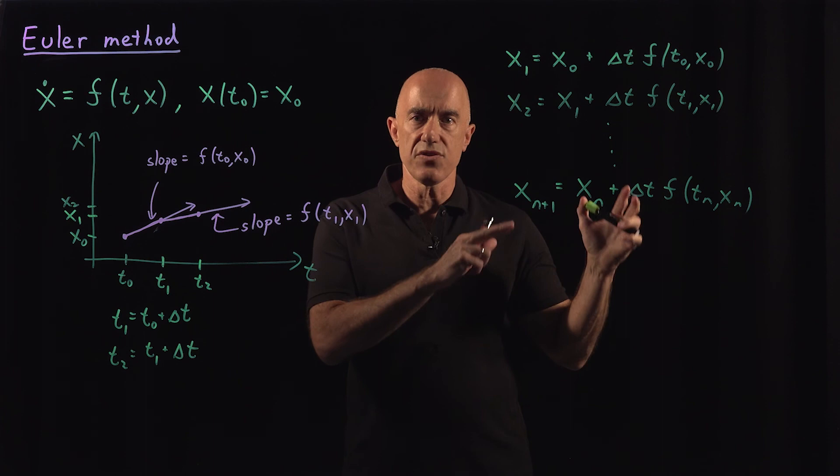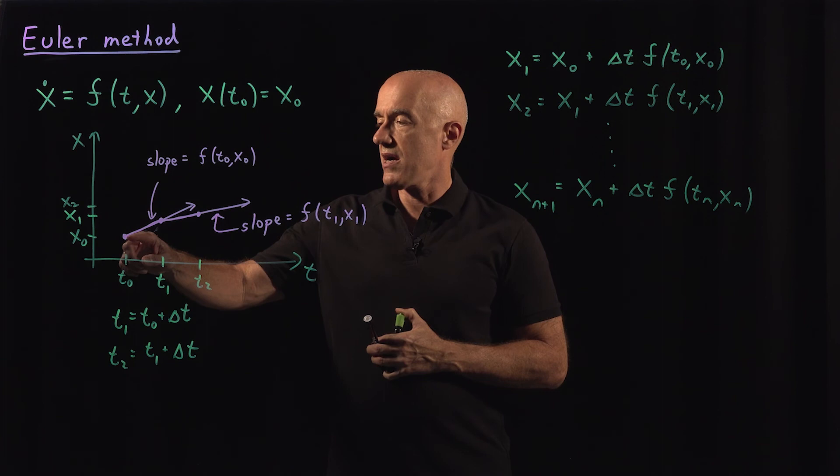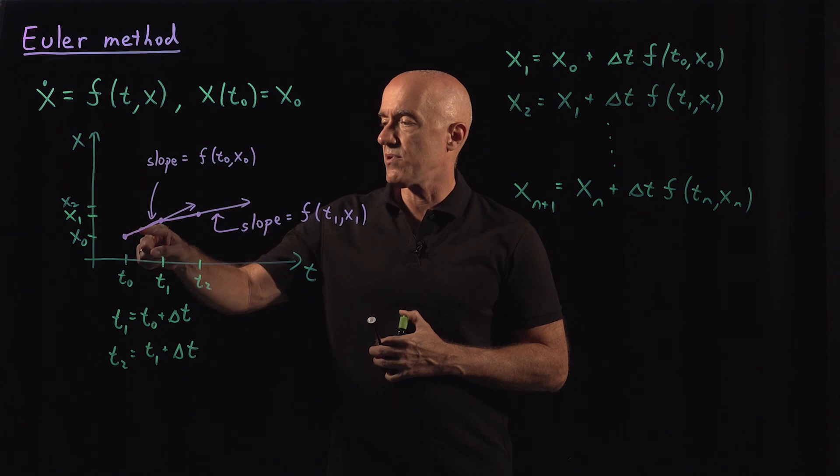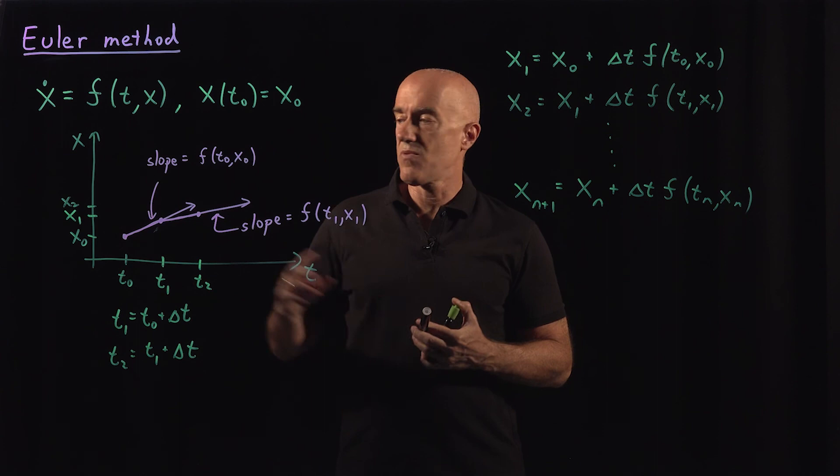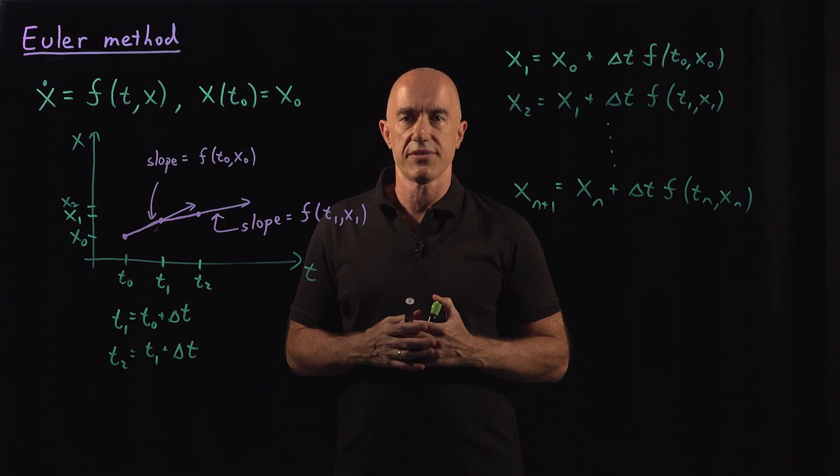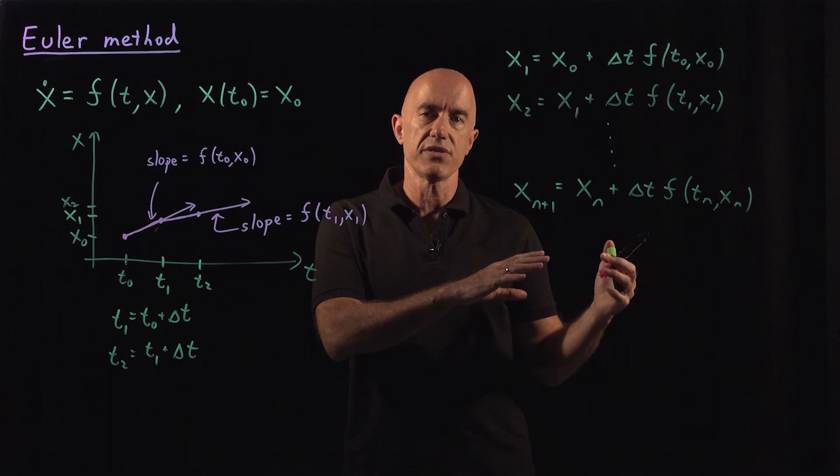But we can do better, and we will do better. One way of doing better is instead of just taking the slope at the leftmost point here, we can sample the slope at other places on the curve. When we start doing it that way, we can develop what's called Runge-Kutta methods. And that's where we're headed, to more accurate differential equation solvers using Runge-Kutta methods.